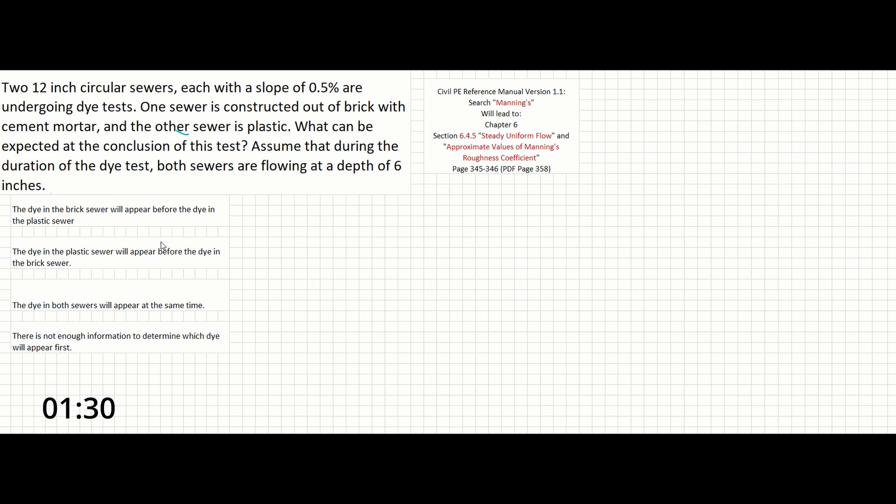A quick glance at the table of roughness values on page 346 shows us that brick and mortar sewers have a Manning's n of 0.015, while plastic sewers have a Manning's n of 0.013.